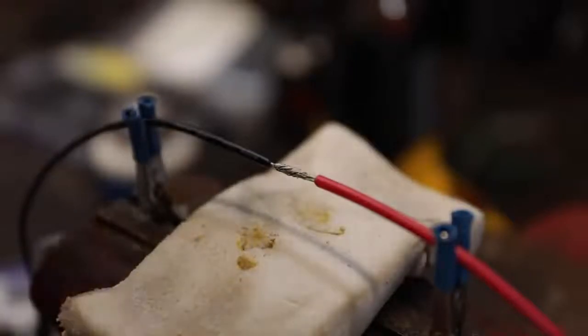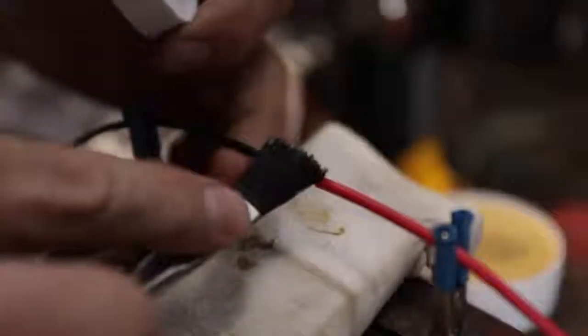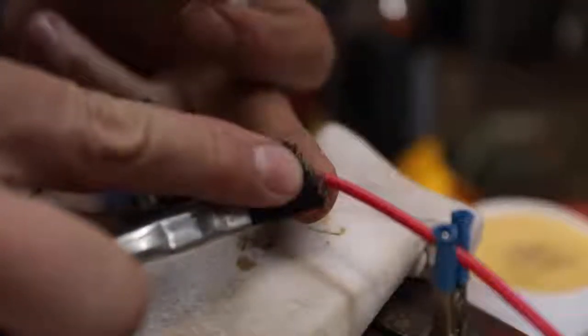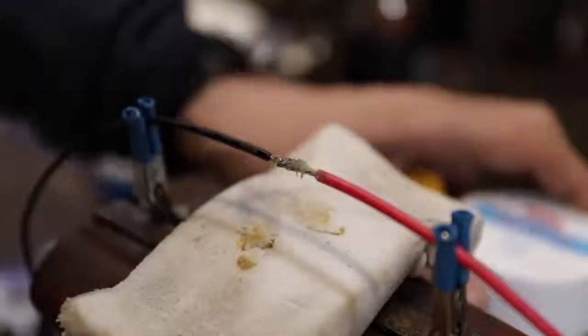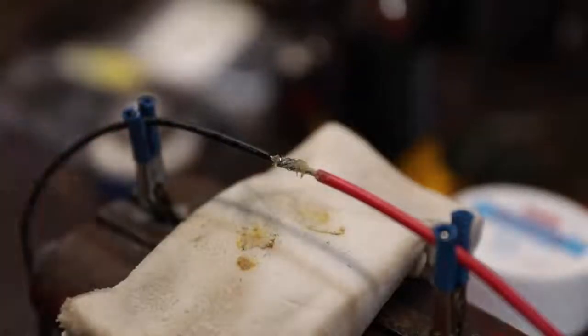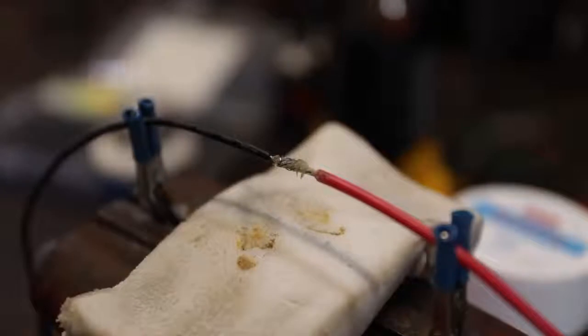Now with everything ready, you're going to take your rosin flux and we're going to apply that on there like that. Just coat that on there and that's going to help that solder to bind. It wouldn't probably be a bad idea to have heated that up first. And then we're going to get our soldering iron and untangle the cord that hooks on everything.